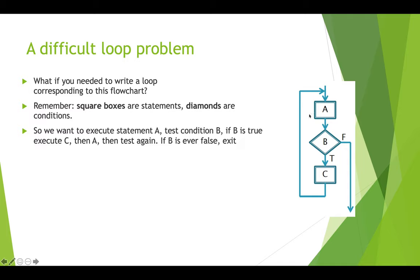So we want to do the statements in A, then we need to test B. If B is true, then we want to do the statements in C and the statements in A, and then test B again. If B is false, we want to exit out and not do the statements in C. This is a little bit more complicated than the standard loop that we've been talking about, and so there's a number of different ways that you could do it.